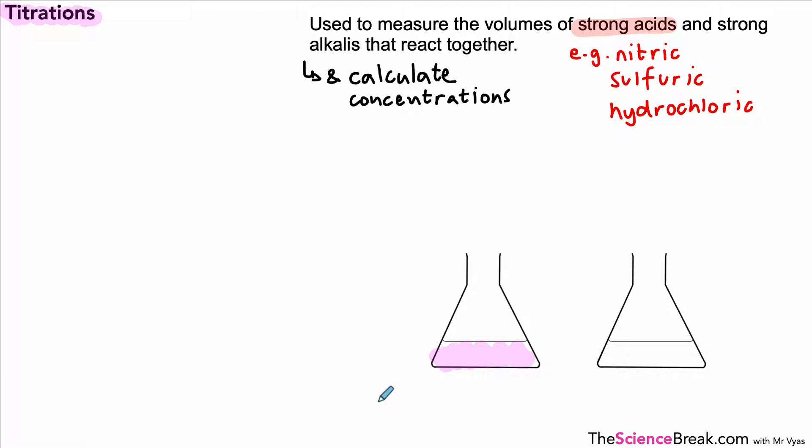So imagine here we've got some alkali with some indicator in a flask. Alkali plus indicator, a common indicator being phenolphthalein. We don't use universal indicator because it has a gradual color change and not a sudden sharp color change.